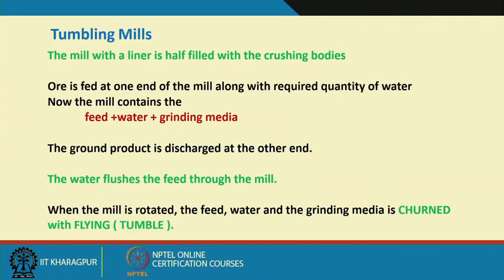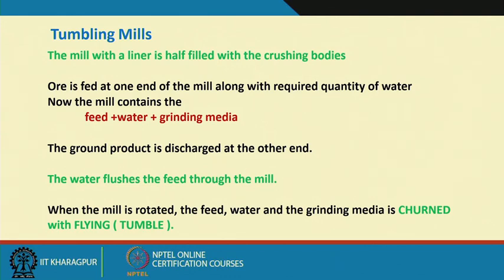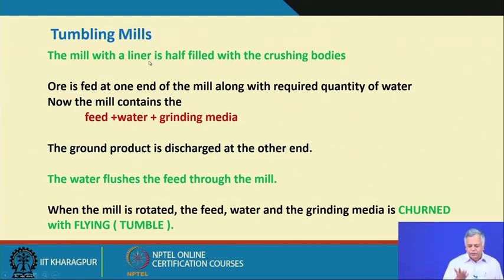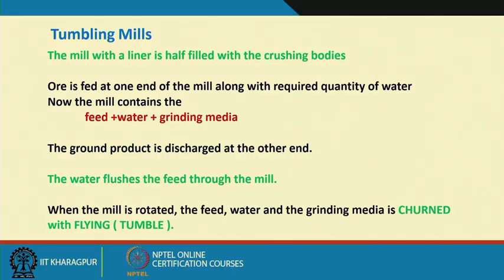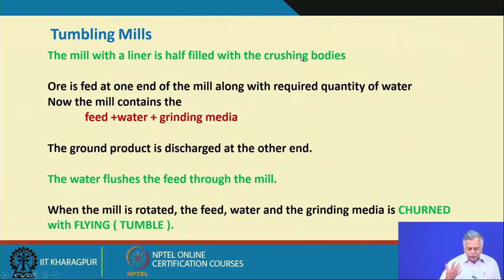Where does grinding occur, and what equipment do we use? We call them tumbling mills because they are rotating type of mills. The mill has a liner — that is the grinding surface inside the mill. It is a tubular shape and we introduce material into it. We also introduce some grinding media and then rotate it along with water, or it may be dry. Why do we use a liner? Because the material is susceptible to wear — when it wears out we do not have to replace the entire mill, but we can replace the liner instead.